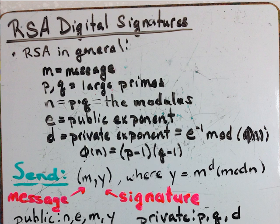E is the public exponent, and D is the private exponent which equals E inverse mod phi of N, where phi of N is P minus 1 times Q minus 1.